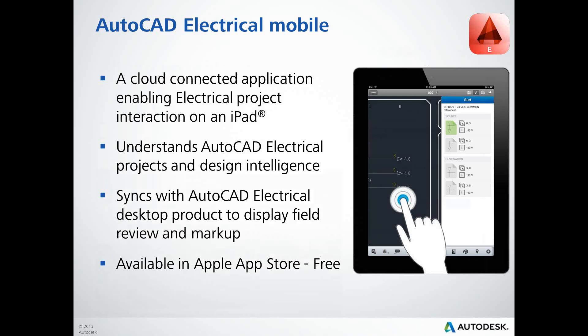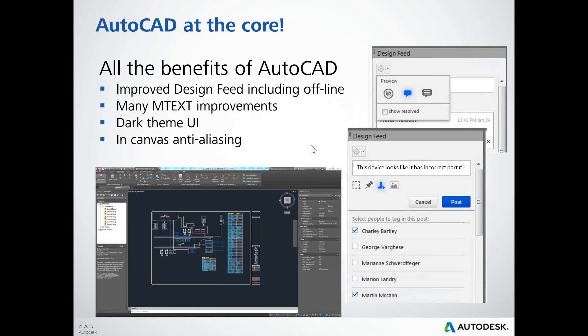Since AutoCAD Electrical is built on top of AutoCAD, we also have all of those AutoCAD changes built in — improved design feed including offline texting, mText improvements, a new UI with a dark interface, and in-canvas anti-aliasing. Anything that's happening with AutoCAD also happens with AutoCAD Electrical.